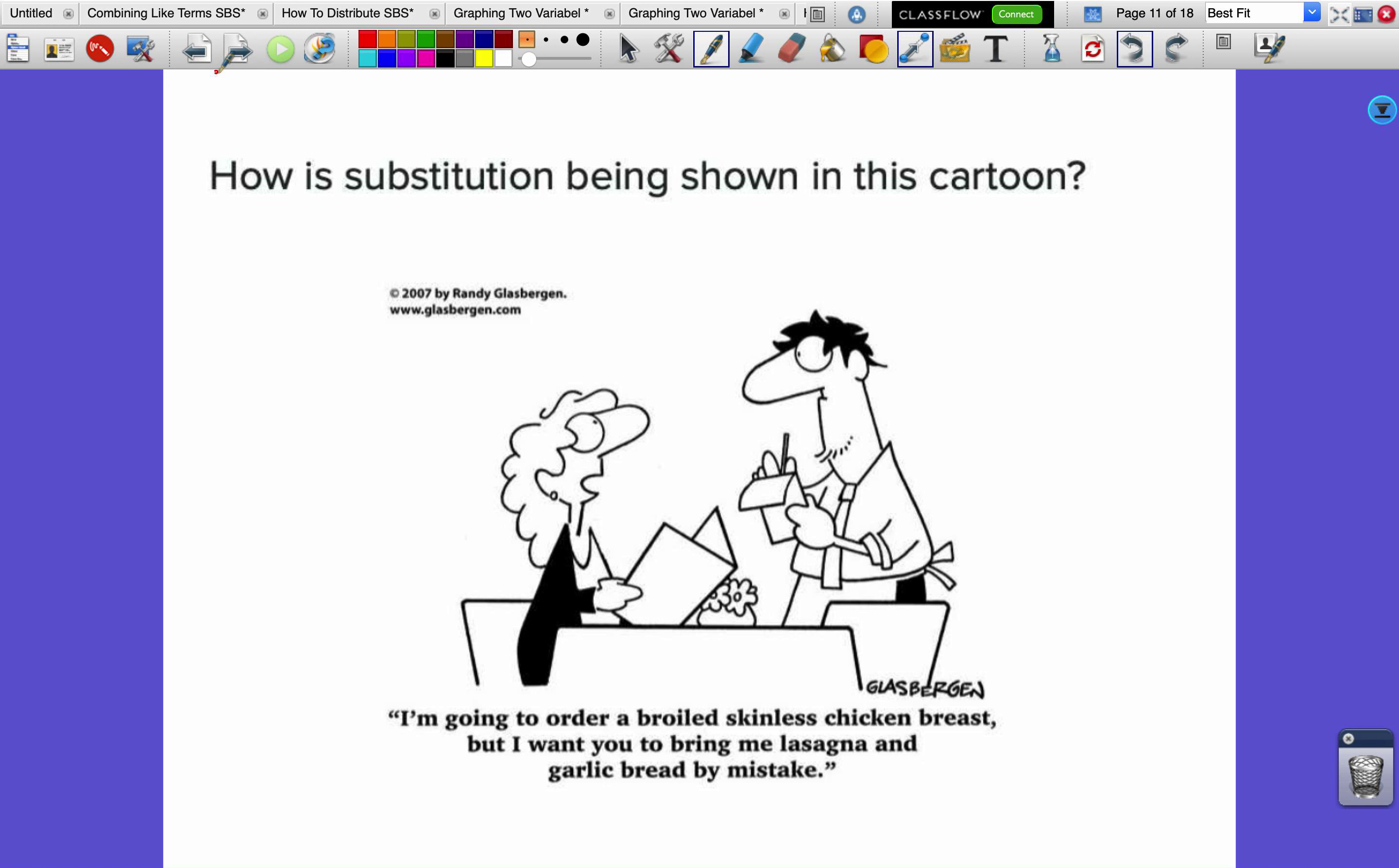How is substitution being shown in this cartoon? We got this person ordering. She says I'm going to order a broiled skinless chicken breast, but I want you to bring me lasagna and garlic bread by mistake. So we can substitute in sports, we can also substitute at a restaurant. She wants the waiter to make a mistake and bring the wrong thing so that she can eat the less healthy meal but feel less guilty.